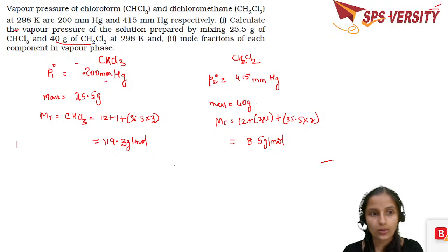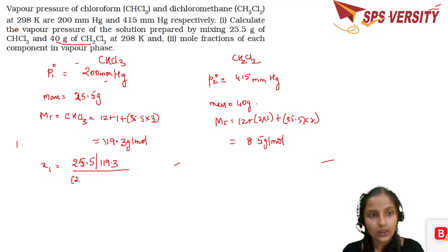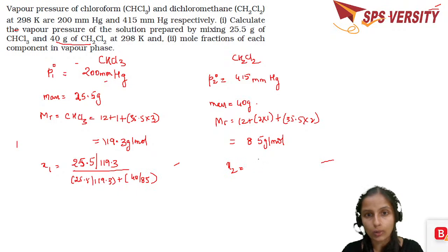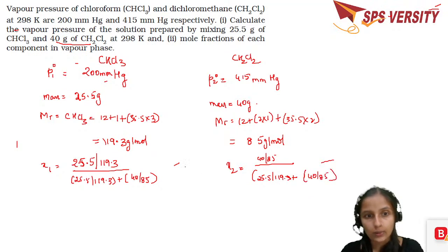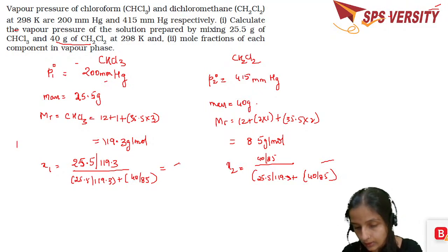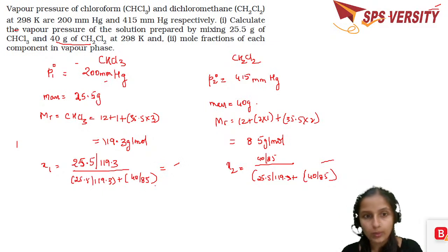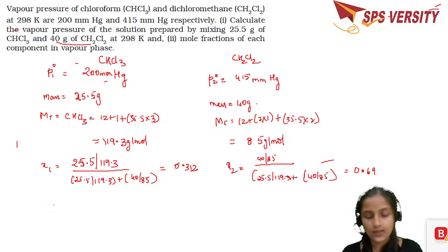Using the molar mass values, we calculate x1. x1 = (number of moles of component 1) / (total moles) = (25.5/119.3) / [(25.5/119.3) + (40/85)]. The number of moles of component 2 is 40/85. The total number of moles in the denominator is approximately 0.683, giving x1 ≈ 0.31 and x2 ≈ 0.69.